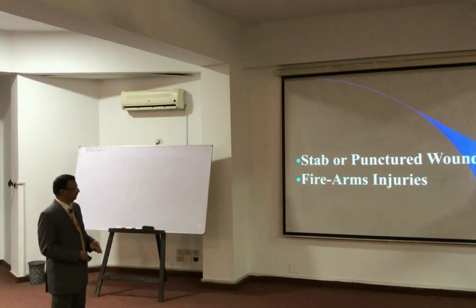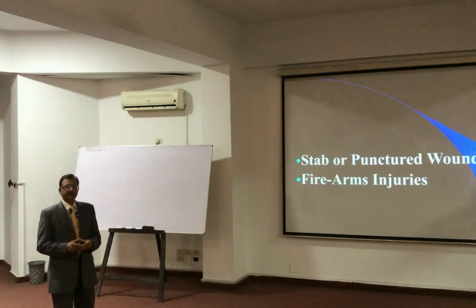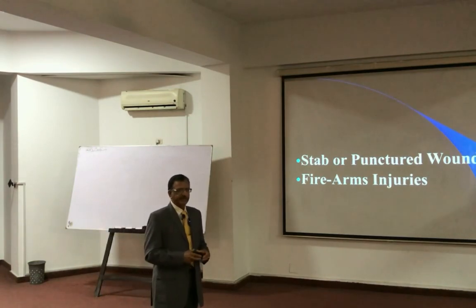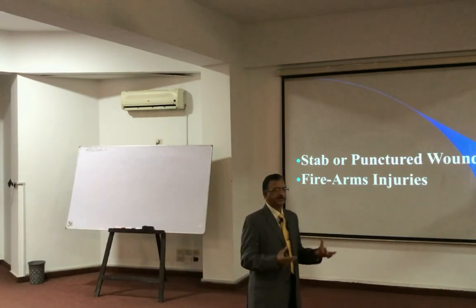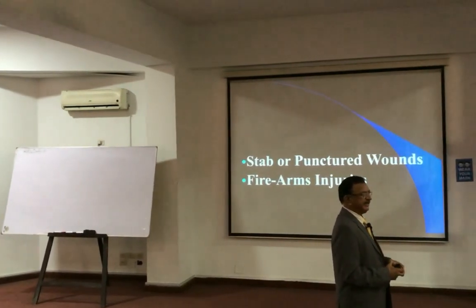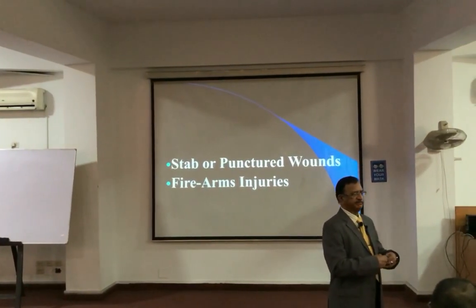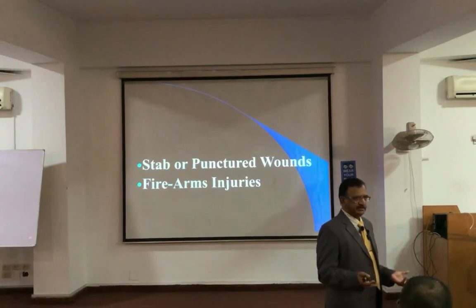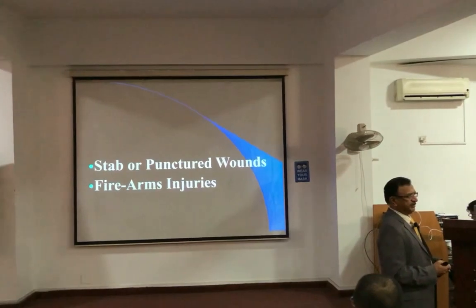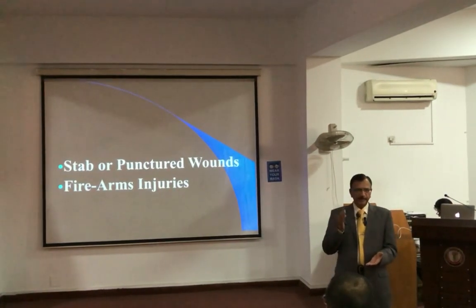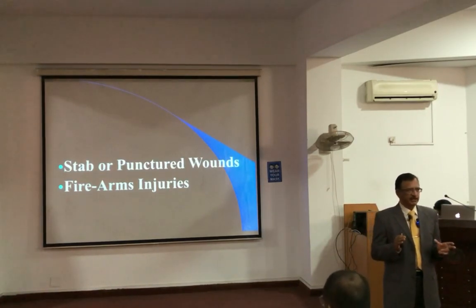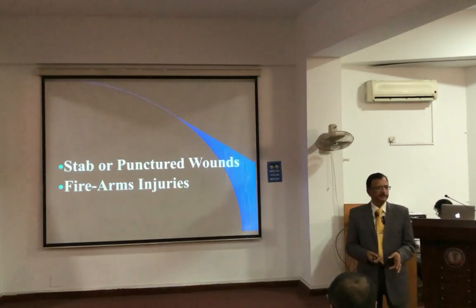It is a stab or punctured wound. Then there are firearm injuries. Firearm injuries are grouped separately because in a firearm injury we say that the whole of traumatology is present — the firearm contains not only the bullet but also fire, pressure gases, shock waves, and gun powder that travels. So it causes burning, blackening, tattooing, laceration, and fractures — all types of injuries come under the heading of firearms.